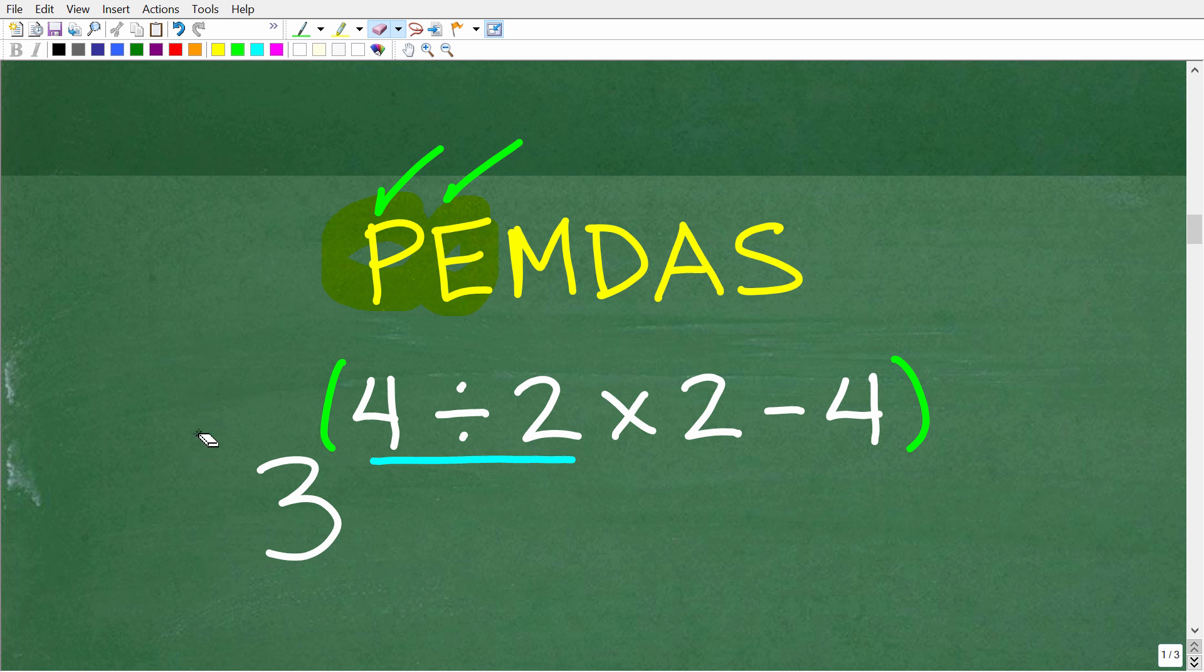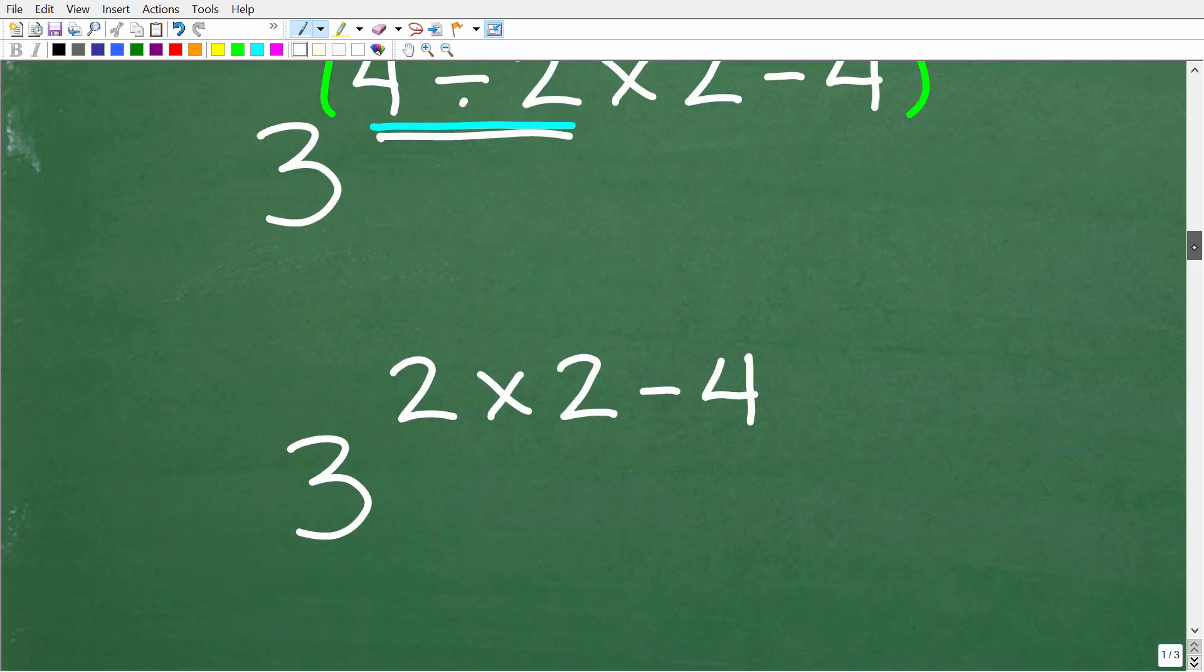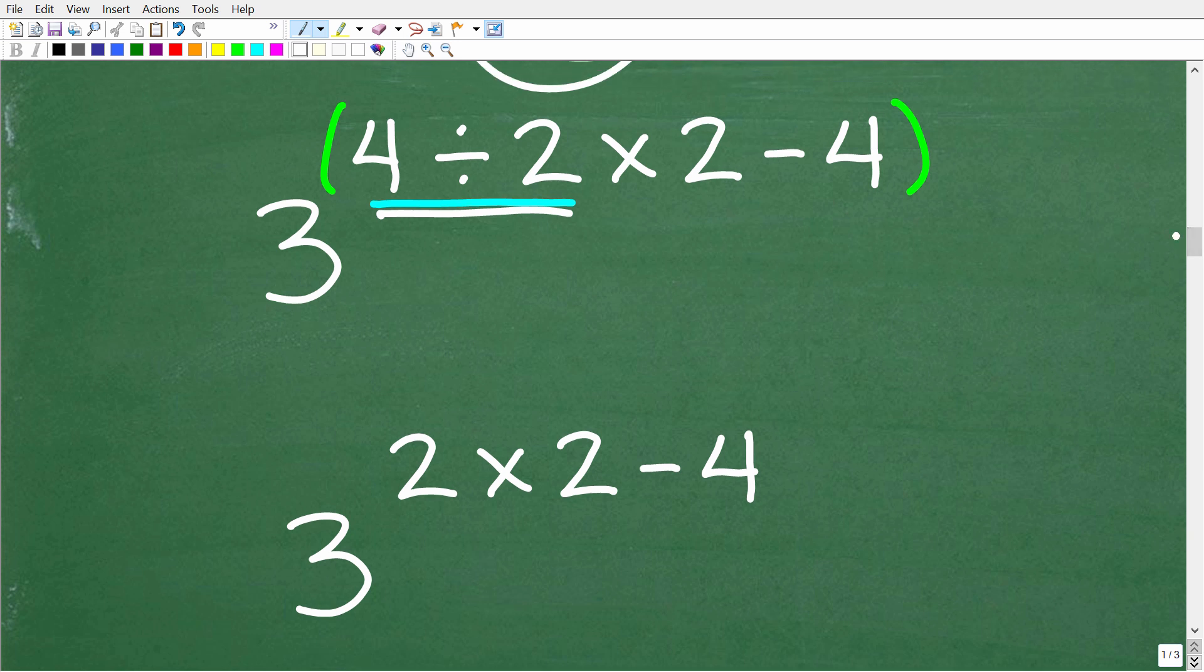Now we look at M and D - do we have multiplication and division? We scan the problem: here we have division, here we have multiplication. What do we see first from left to right? We see division first. So this is our first step. 4 divided by 2 - we're talking basic math here - is of course 2.